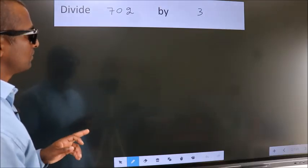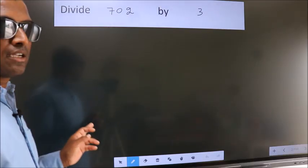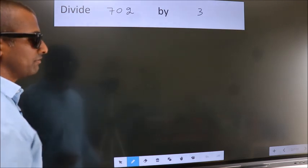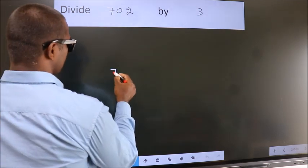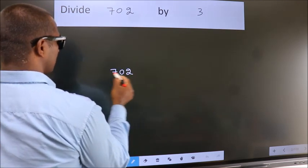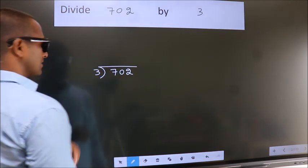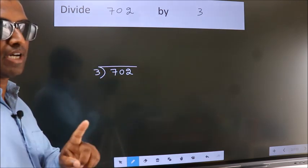Divide 702 by 3. To do this division, we should frame it in this way. 702 here, 3 here. This is your step 1.